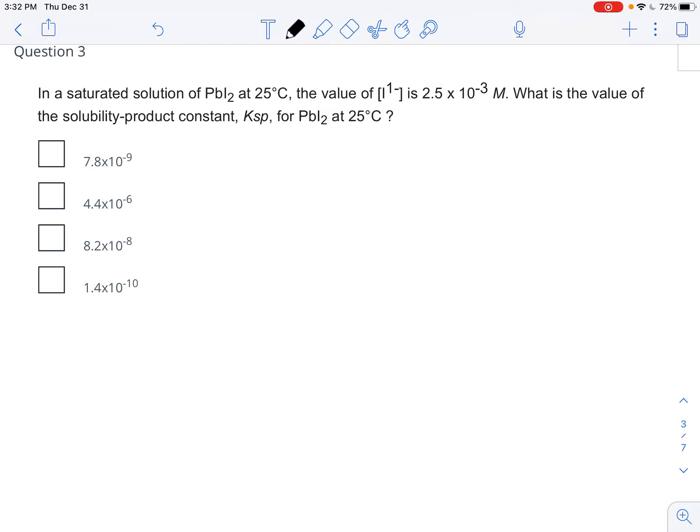In question number three, you have basically the same exact thing except that you have lead iodide. Lead iodide is going to break into the lead and then two iodides, and so your Ksp is going to be equal to your lead times your iodide squared.